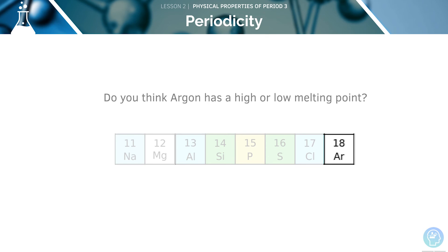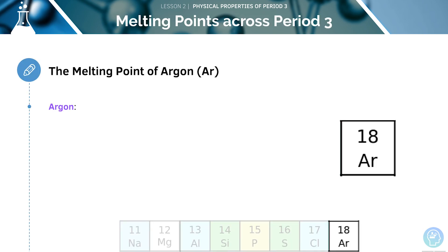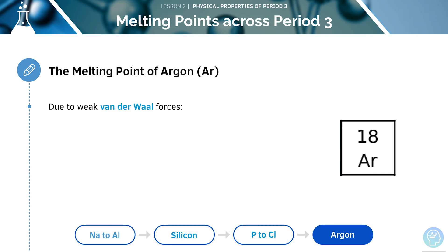How about argon? This will have the lowest melting point of all the elements in period three. Argon is a noble gas and therefore has a very low melting point as it exists as a monatomic element consisting of very weak van der Waals forces. These weak van der Waals forces only need a small amount of energy to break them and so make argon have a low melting point.